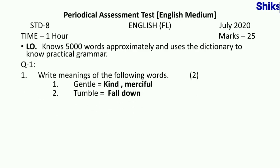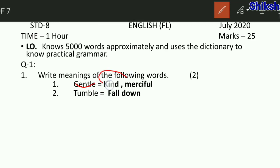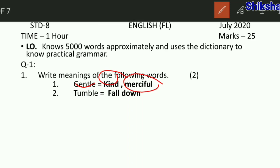First में आपसे पूछा गया है — right meaning of the following words, आपको इनके meanings बताने हैं। तो first दिया गया है: gentle — gentle का meaning होता है kind and merciful। यह हो गया gentle का meaning। Then second है: tumble — tumble का meaning होता है fall down, that means गिर जाना।